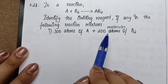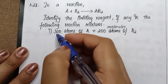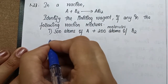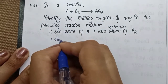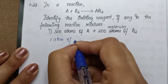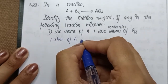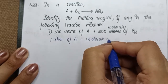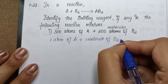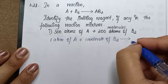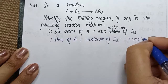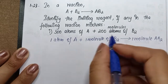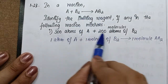To find the limiting reagent, we refer to the balanced equation. As per the equation, one atom of A plus one molecule of B₂ will give one molecule of AB₂. This stoichiometric information is what we use to analyze the given mixture.